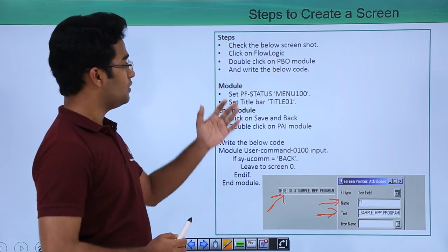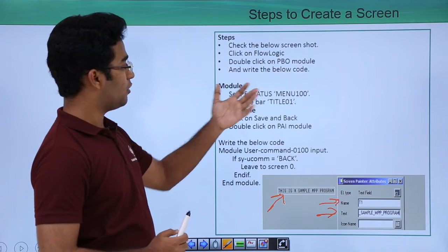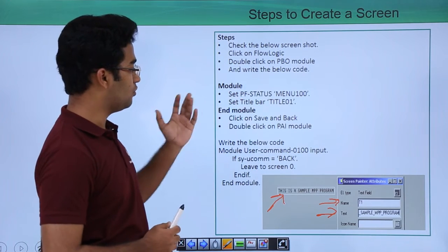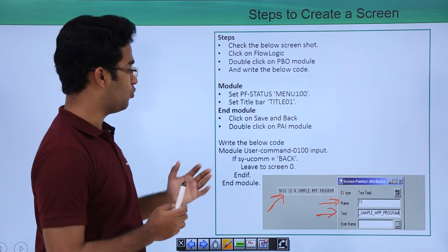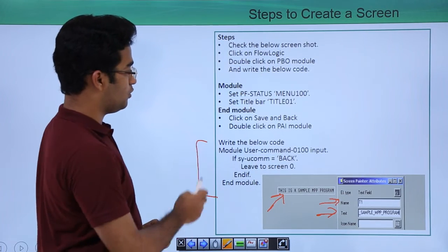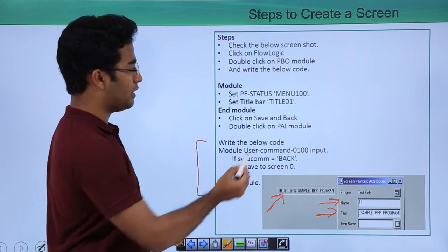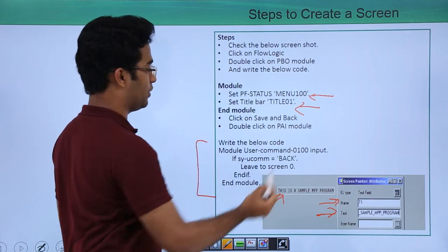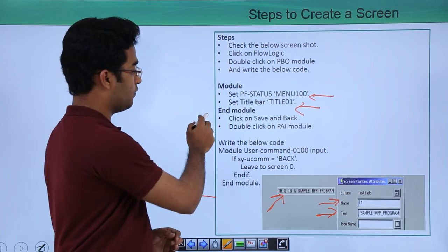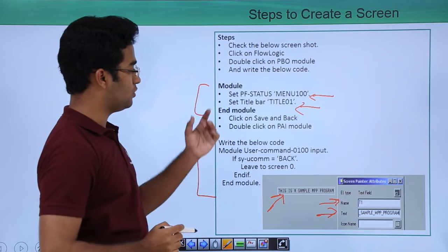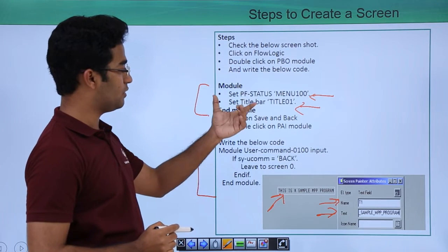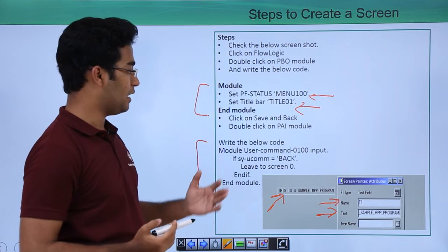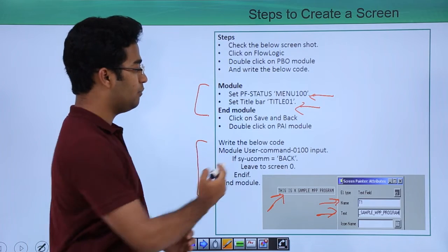Check the screen below. Click on flow logic, double-click on the PBO module and write the code. We set our PF status as MENU100 and the title as TITLE01. Then end the module. Click save and back.